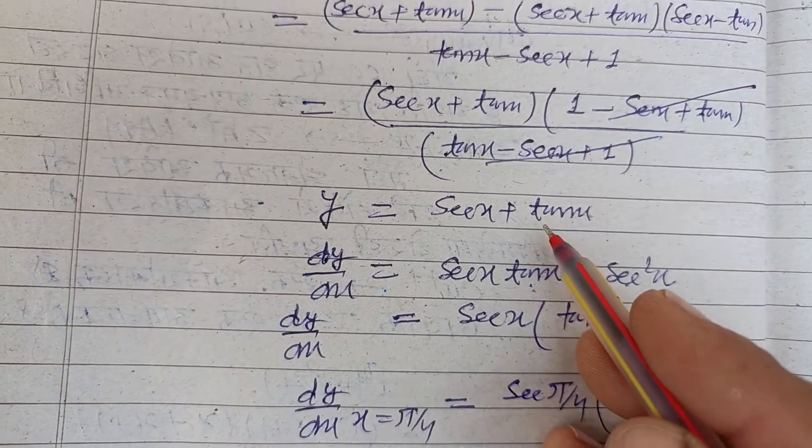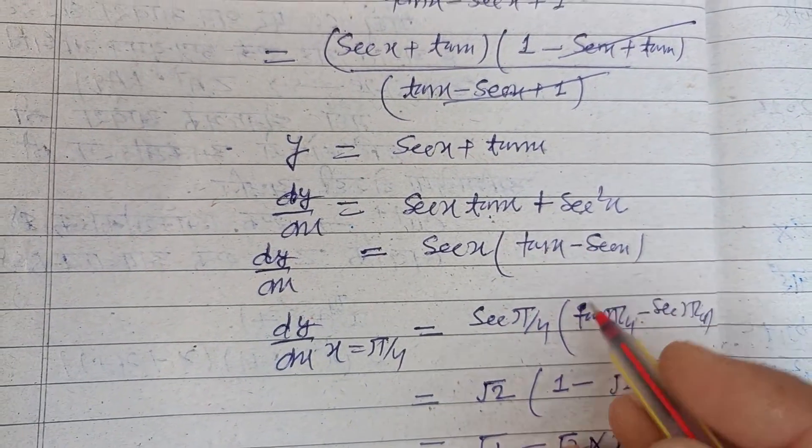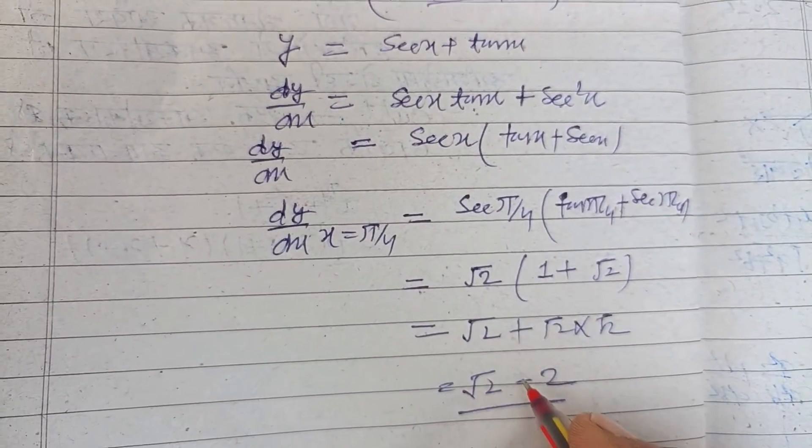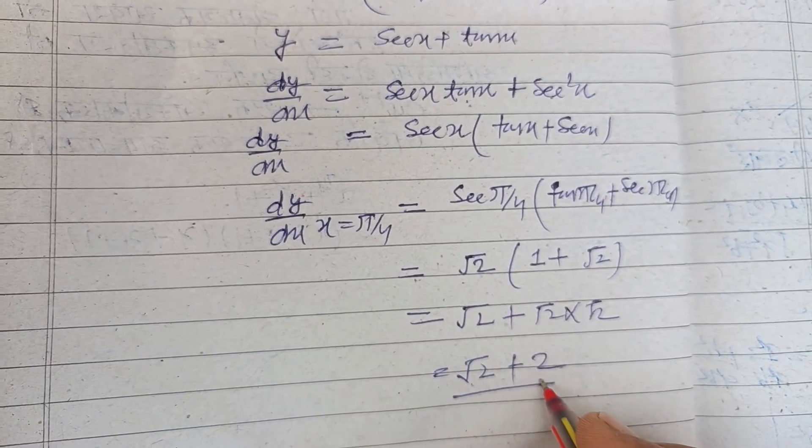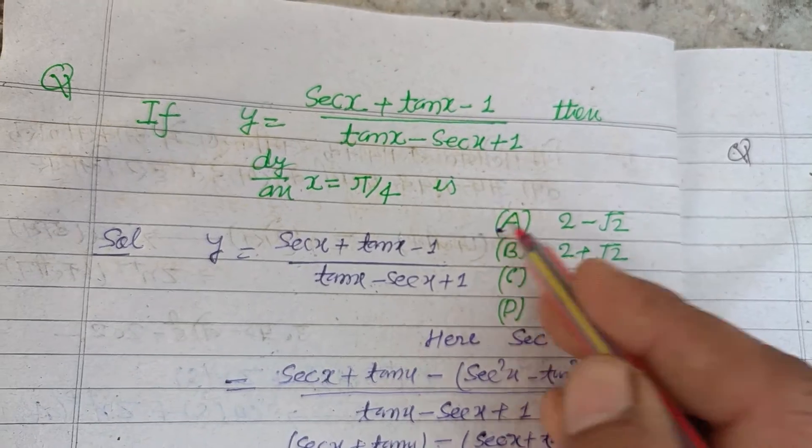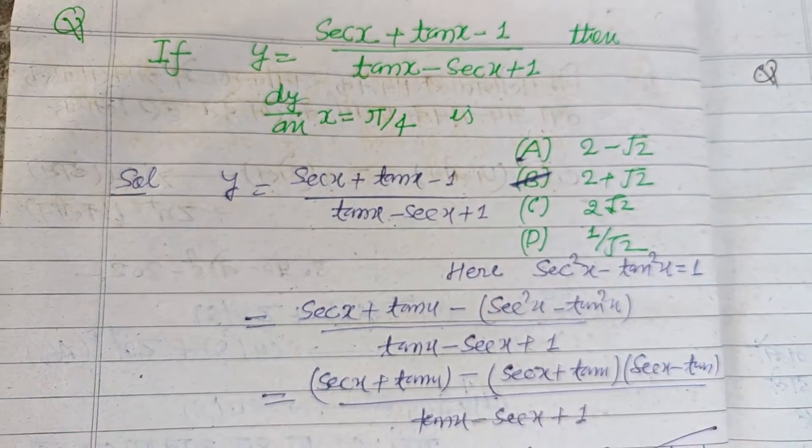Wait, the differentiation of tan x is sec²x, not negative but positive. So we have √2 + 2. This is the correct answer which is found in option B. Option B is correct, students.